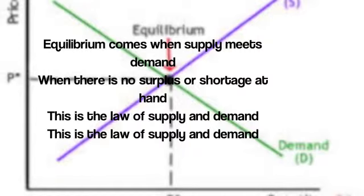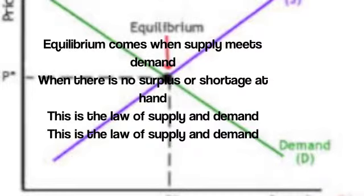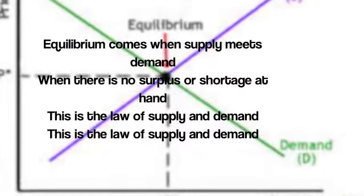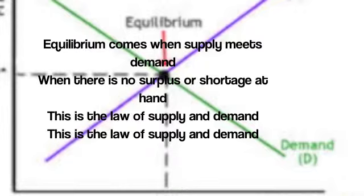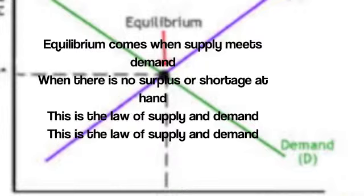Equilibrium comes when supply meets demand, when there is no surplus or shortage at hand. This is the law of supply and demand.